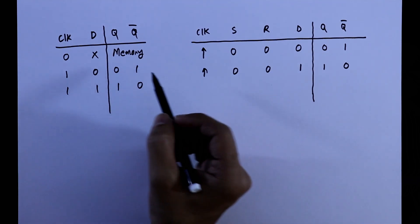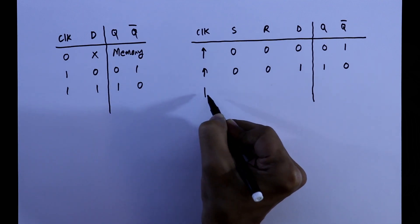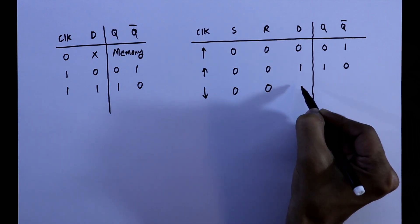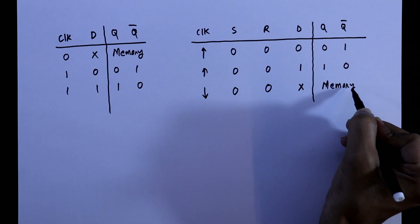Now, as we have seen, the first one, that is clock is 0, that is if it is 1 to 0, set 0, reset 0, then it doesn't matter whether it is 1 or 0, it will be memory, that is the previous state.